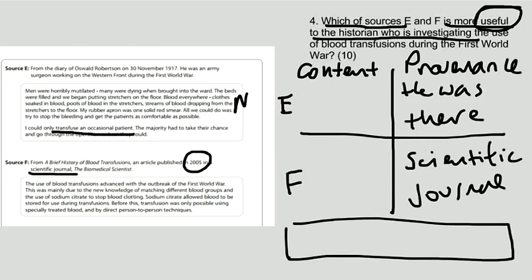The source says: 'The use of blood transfusion advanced with the outbreak of the First World War. This was mainly due to the new knowledge of matching different blood groups and the use of sodium citrate to stop blood clotting. Sodium citrate allowed blood to be stored for later transfusions. Before this, transfusion was only possible using specifically treated blood and by direct person-to-person techniques.' So it tells us a lot about the development of different blood groups and about sodium citrate.